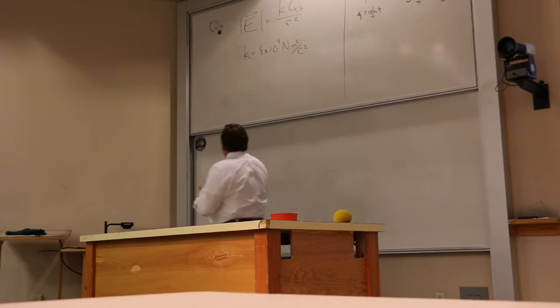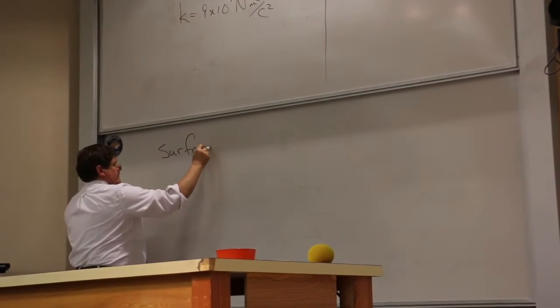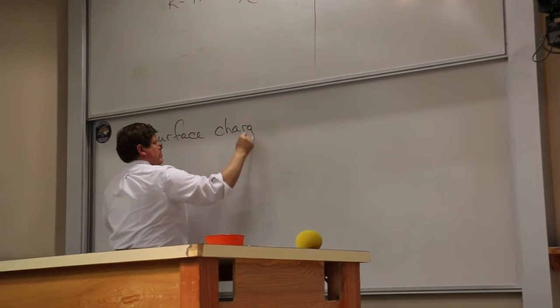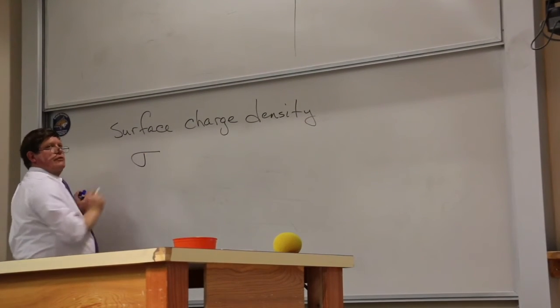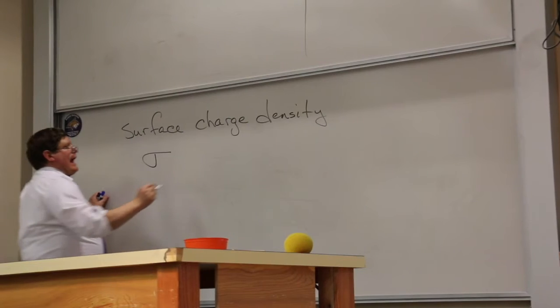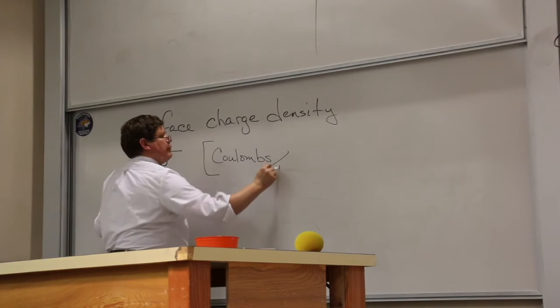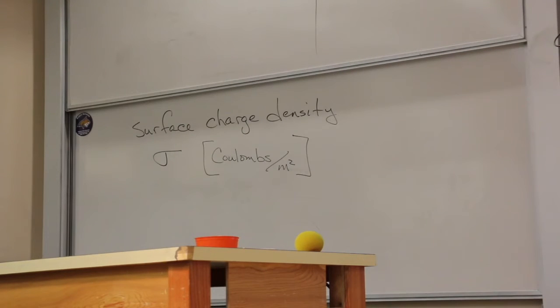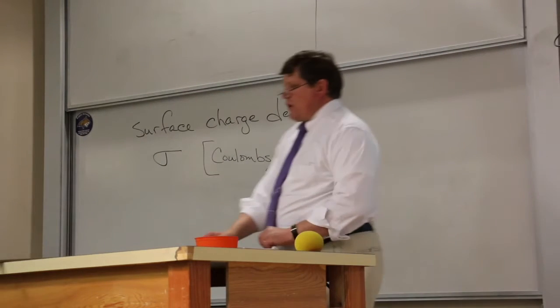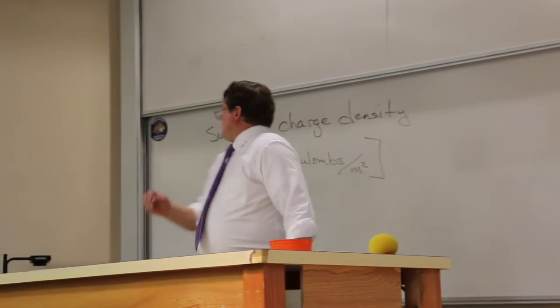Now, that thickness we call the surface charge density. We give it the symbol sigma, the Greek S, and the units of that are coulombs per meter squared, or for each meter squared. So if I take a meter stick and I look at an area that is one meter by one meter, and I add up all the charges in that area, that's how big sigma is.